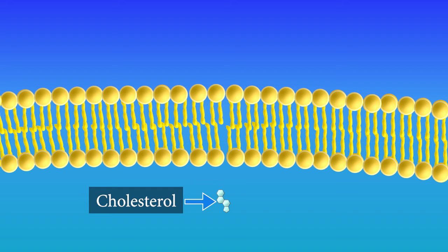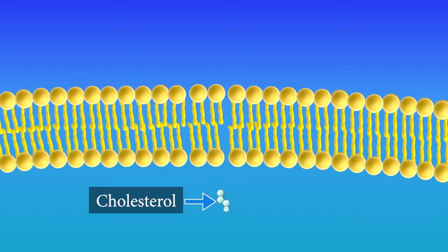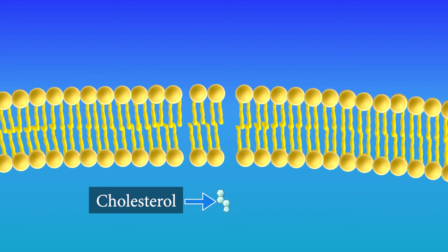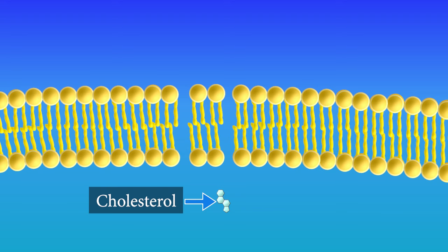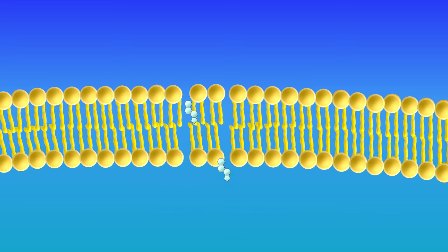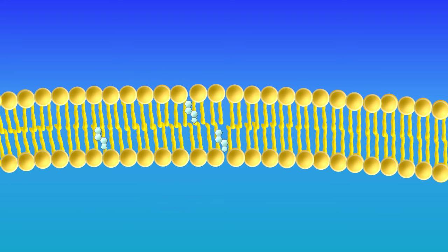A second membrane component is cholesterol. Although people often think of cholesterol as a bad thing, it's actually a very important part of cell membranes, where it helps to stabilize the membrane and make it better at controlling what can pass through it.